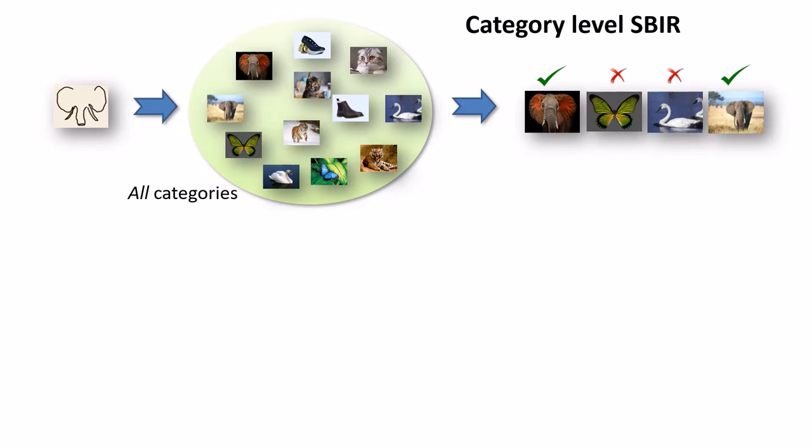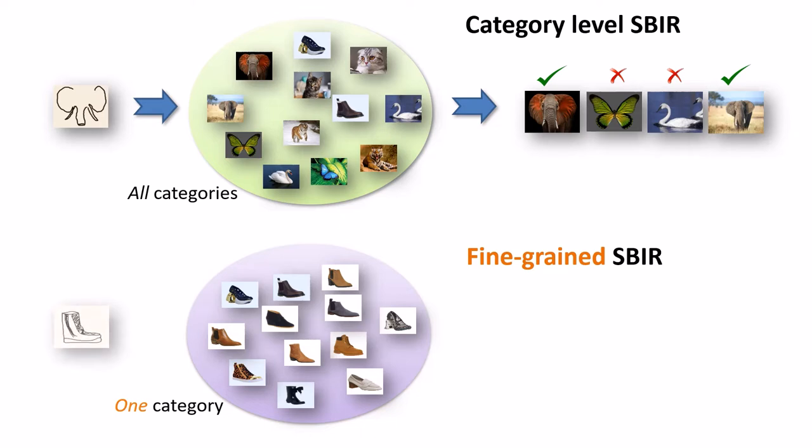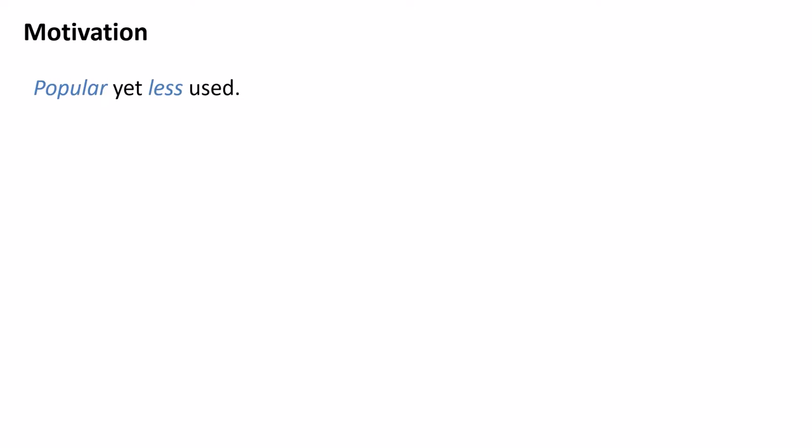Unlike category-level sketch-based image retrieval, which tries to fetch images of the category matching the query sketch, fine-grained SBIR aims at retrieving a particular photo instance from a gallery of images of one category. Despite its significant success in recent times, sketch-based image retrieval is yet to realize its true potential.